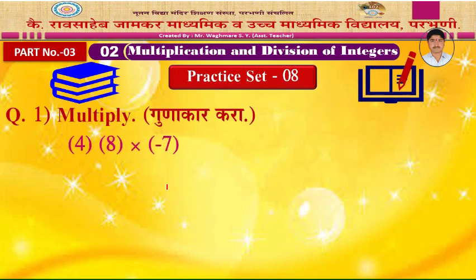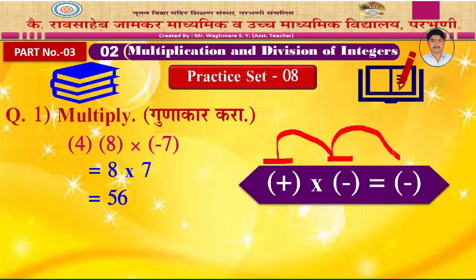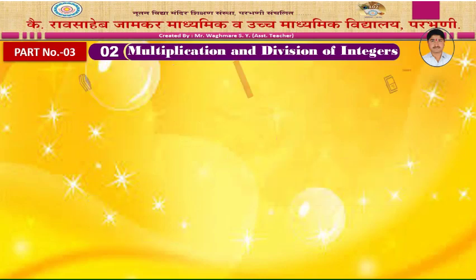Example 4: 8 into minus 7. You may multiply without thinking about the sign — 8 into 7 is 56. Remember the rule: the first number is positive and the second is negative. When one is positive and one is negative, the product is also negative. So write the answer: negative 56.